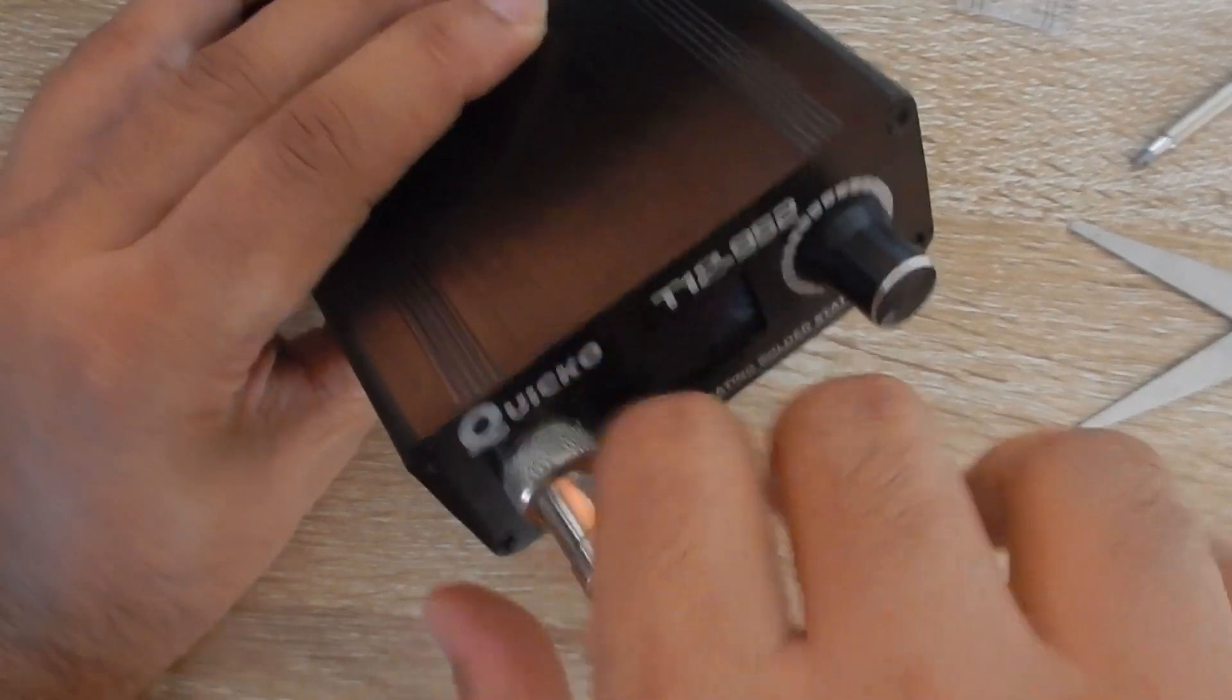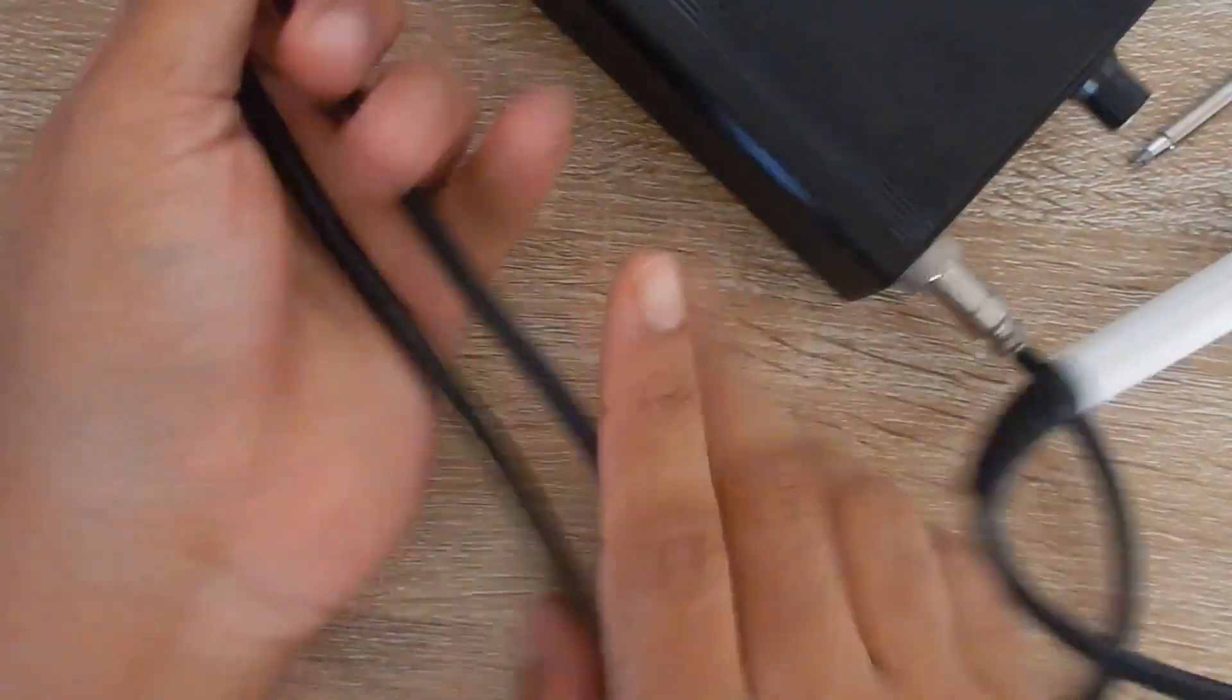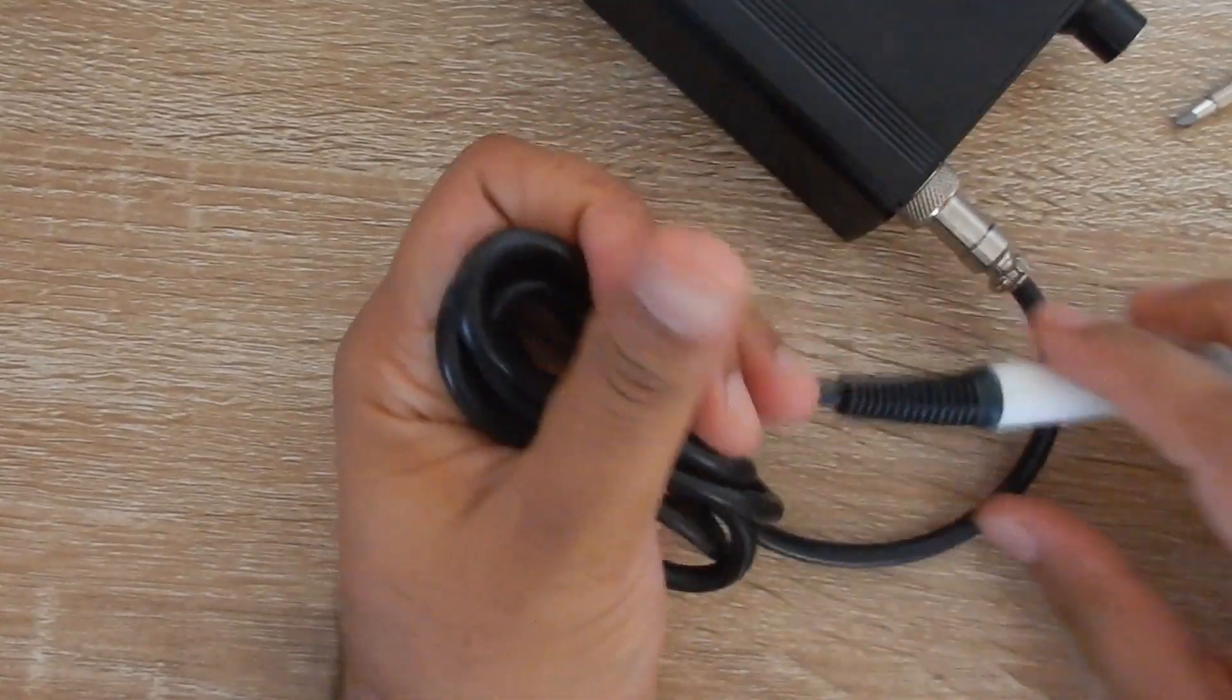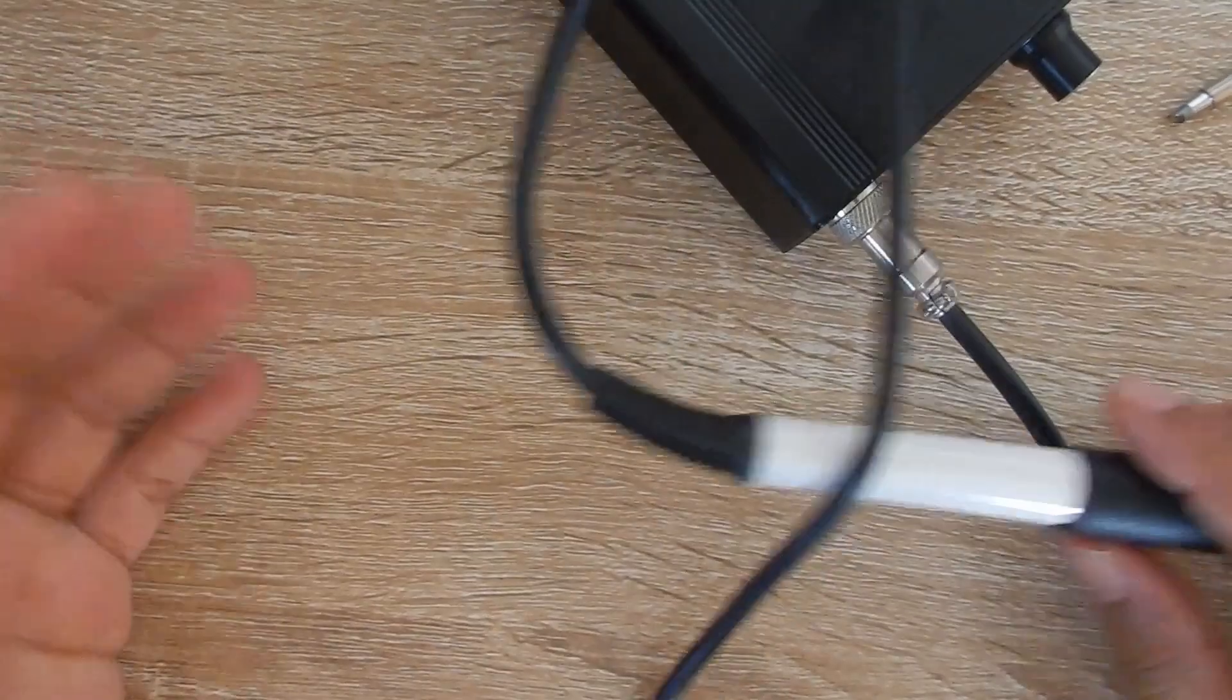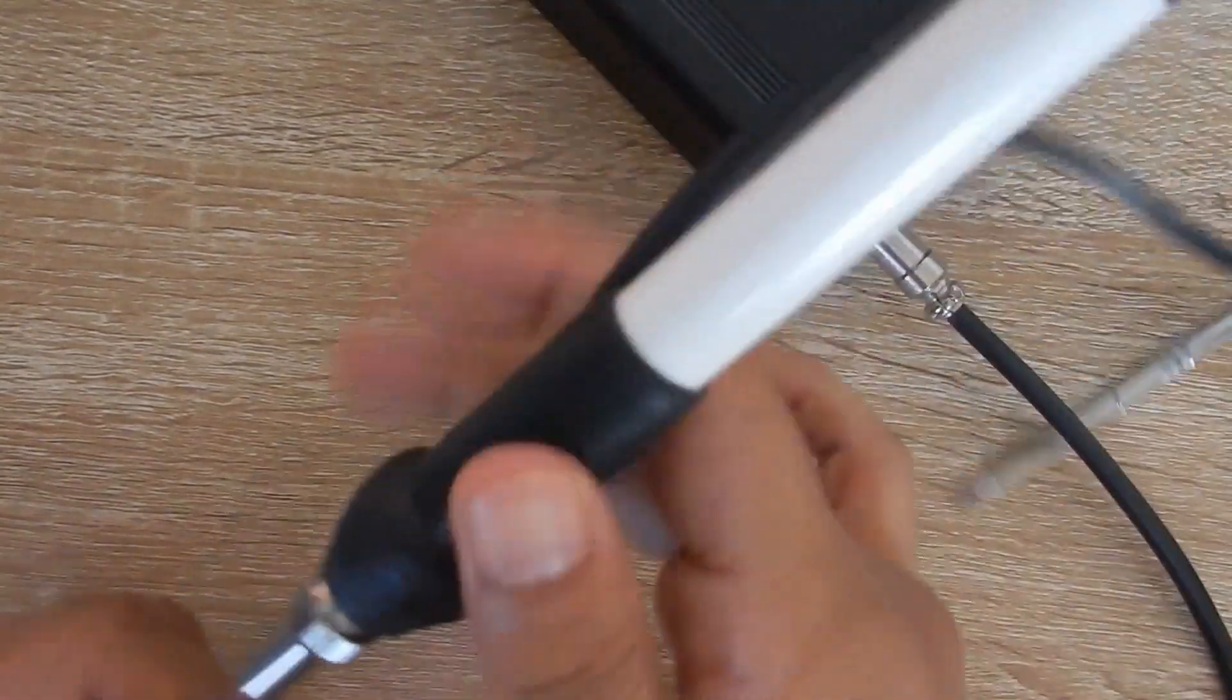You can also purchase the replacement handle for a couple of dollars. The cable feels nice for the price. It is quite soft and flexible and feels like a silicon cable. There is a rubber grip on the solder pencil and there is also a motion sensor built into the pencil.